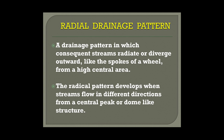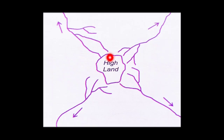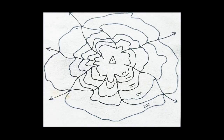The next is the radial drainage pattern — the name itself suggests radiating outward. Streams radiate or diverge outward like the spokes of a wheel from a high central area. You can see arrows showing water moving out from the highland toward the lowland in all directions, with contour values of 400, 350 reducing outward — this is a radial drainage pattern.